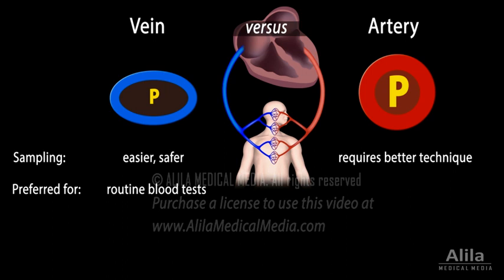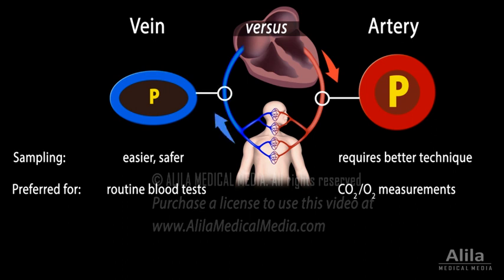However, when it comes to carbon dioxide and oxygen measurements, arterial blood is generally more reliable because it comes directly from the heart after being oxygenated in the lungs, whereas venous blood is pooled from various body tissues after delivering oxygen and collecting metabolic waste.